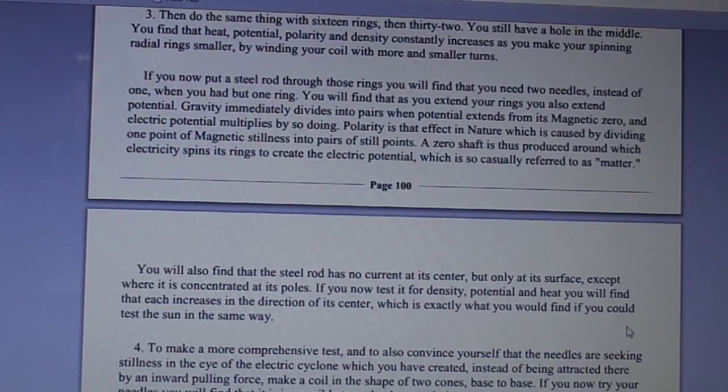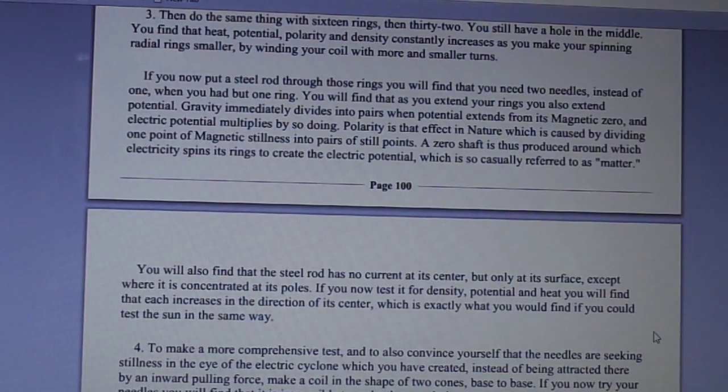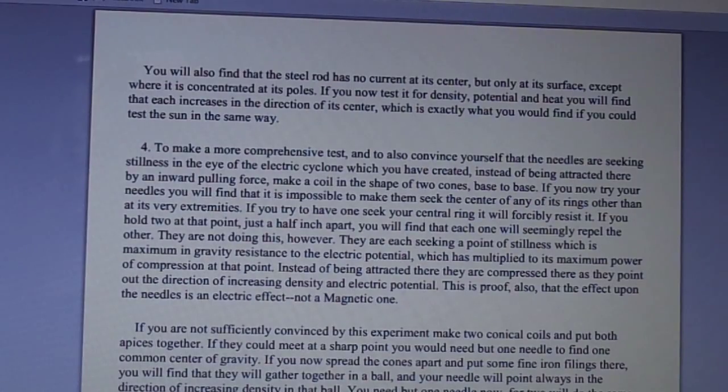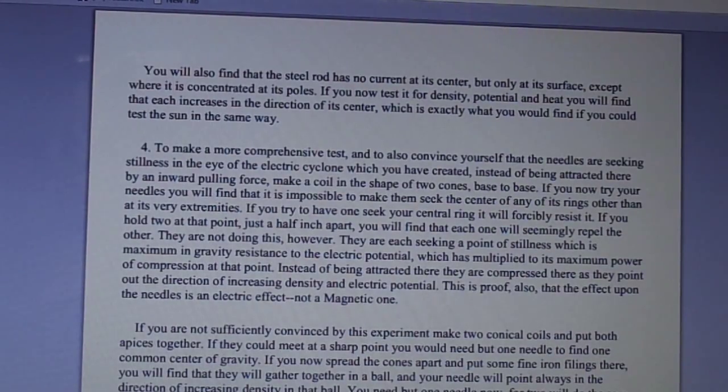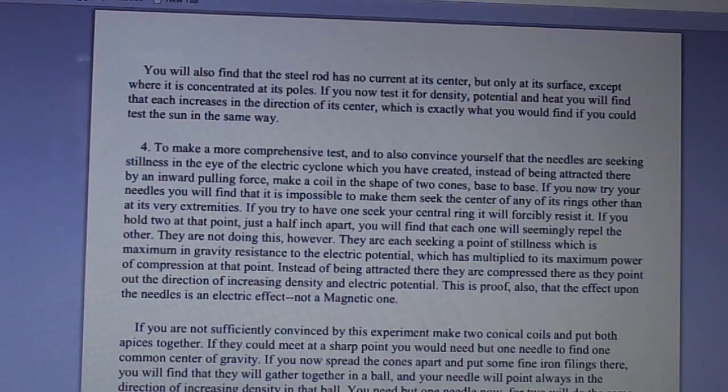You will also find that the steel rod has no current at its center but only at its surface, except where it is concentrated at its poles. If you now test it for density, potential, and heat, you will find that each increases in the direction of its center, which is exactly what you would find if you test the sun in the same way. To make a more comprehensive test and to also convince yourself that the needles are seeking stillness in the eye of the electric cyclone which you have created instead of being attracted there by an inward pulling force, make a coil in the shape of two cones base to base. If you now try your needles, you will find that it is impossible to make them seek the center of any of its rings other than at its very extremities.